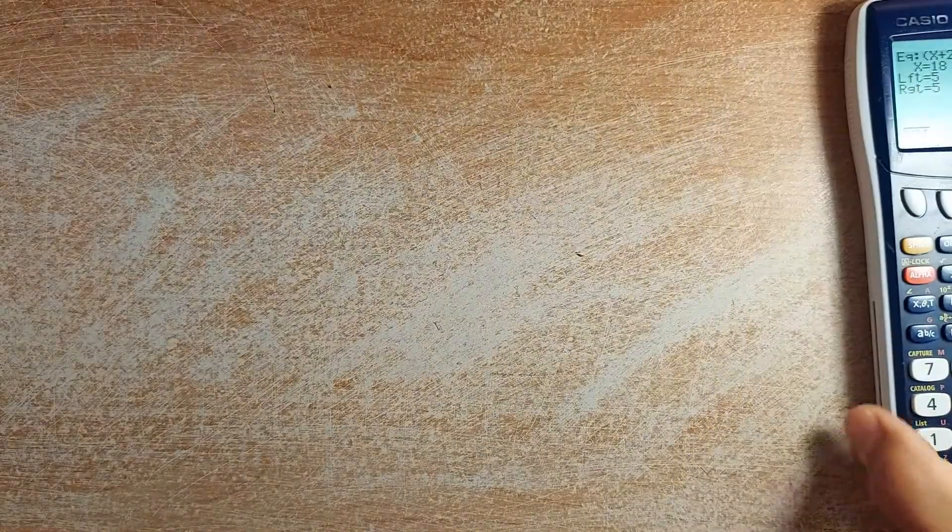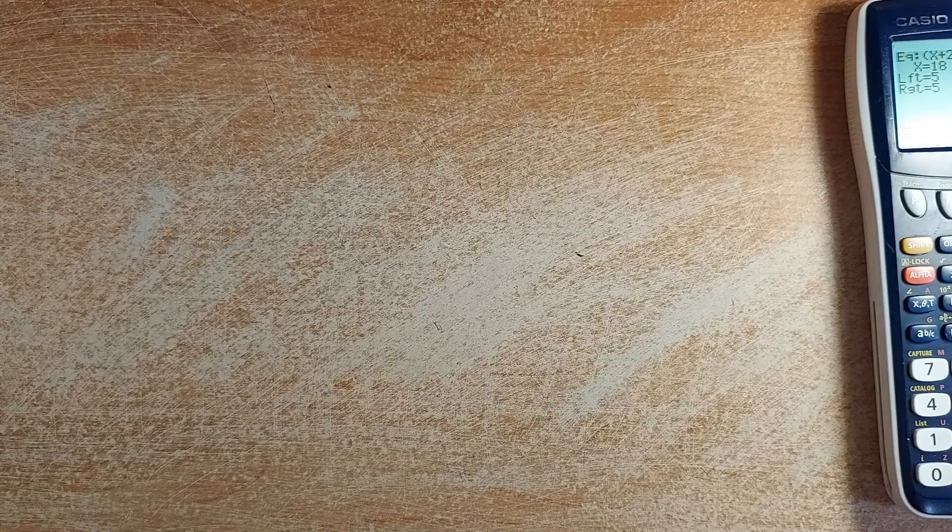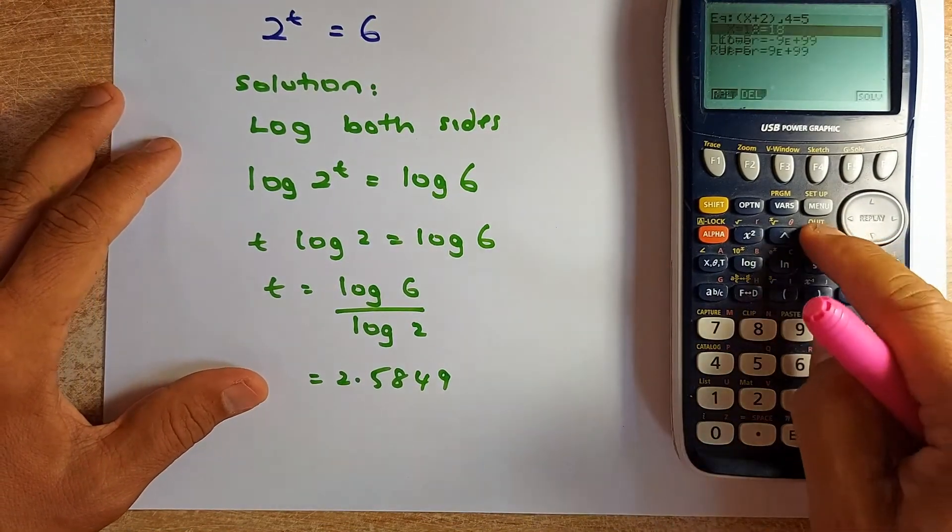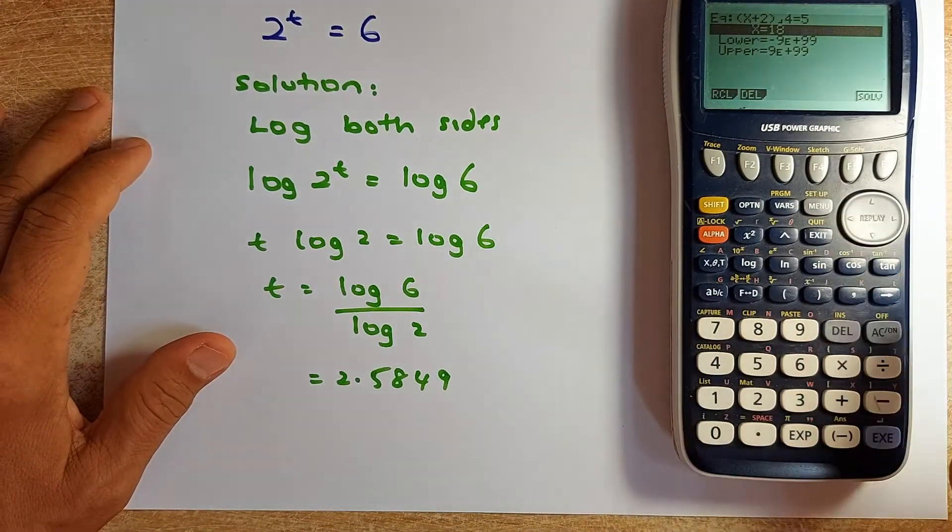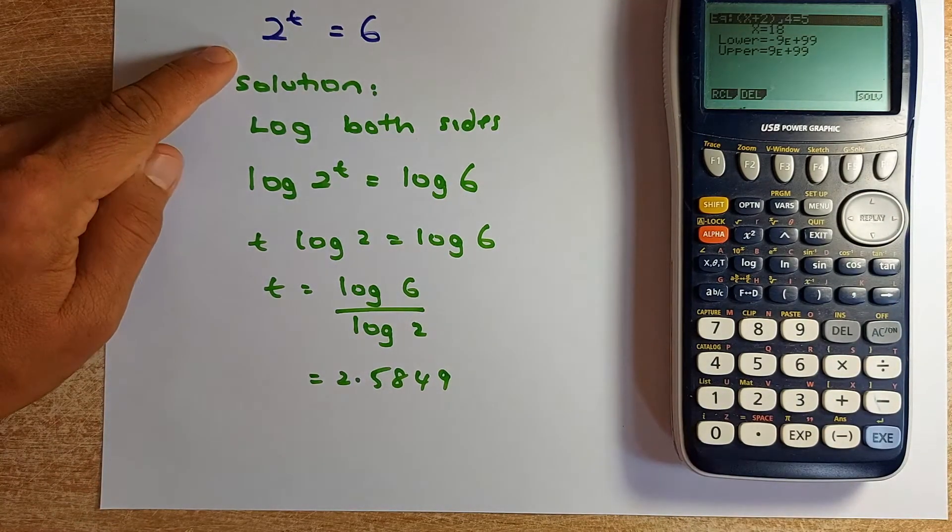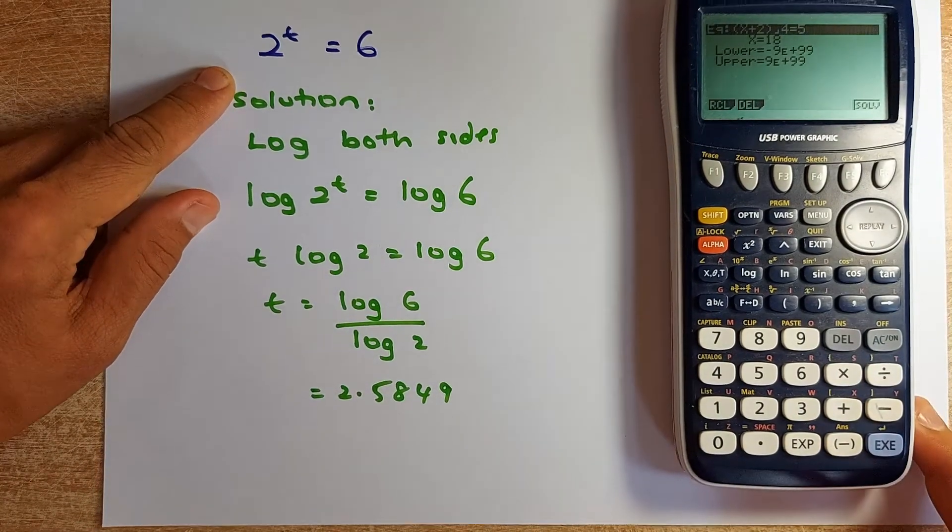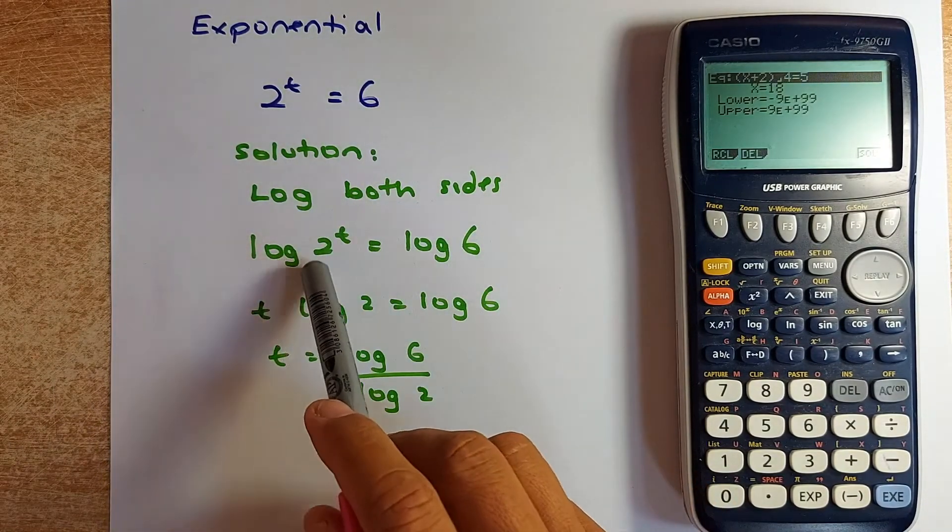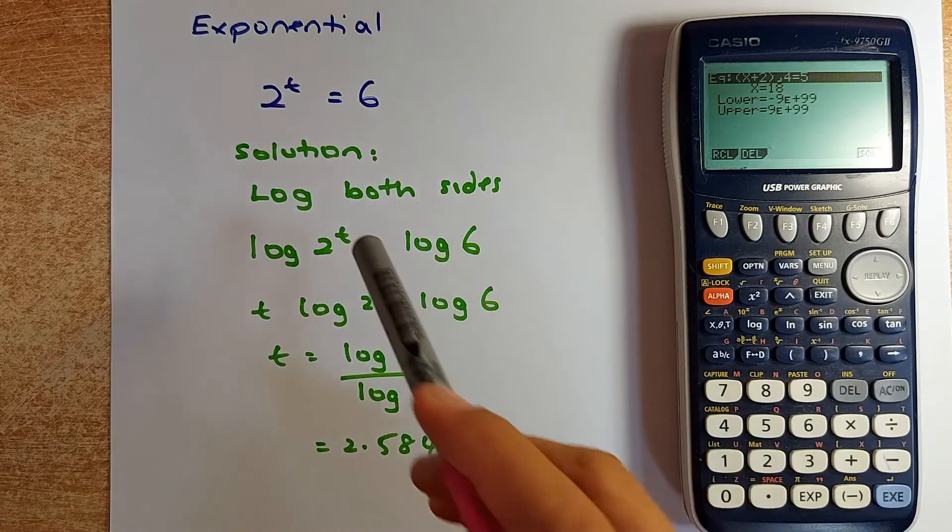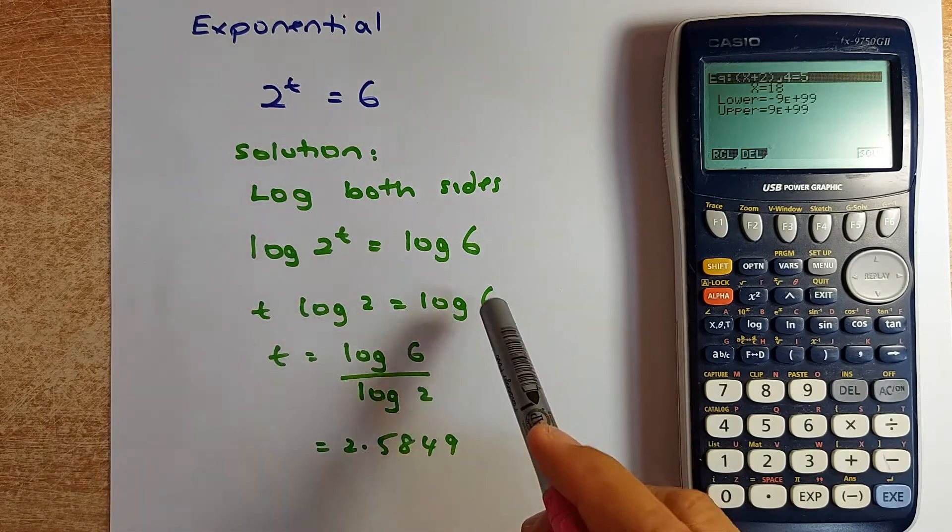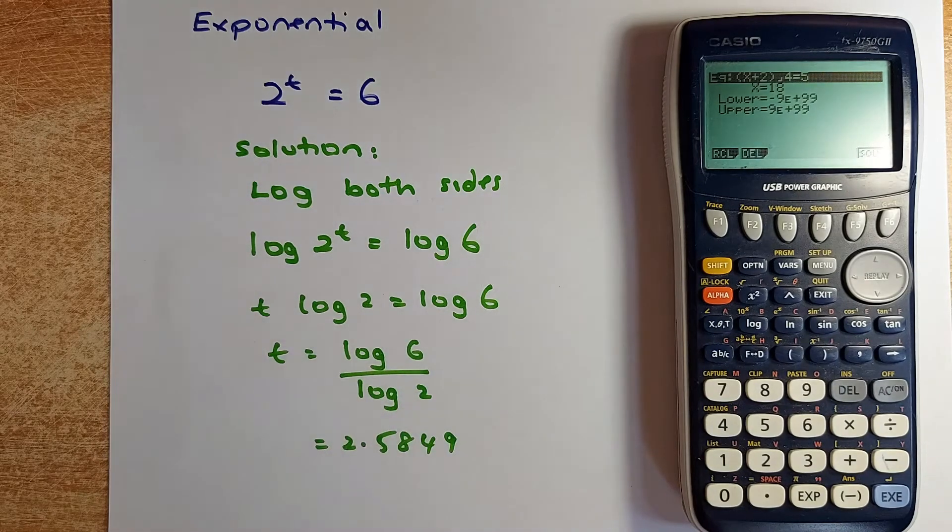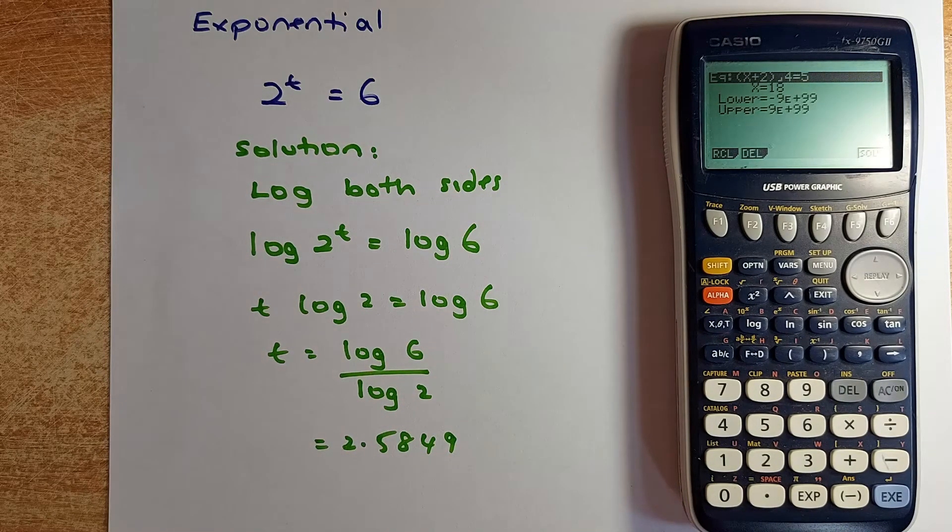Now we are going to do a harder example. We are doing exponential. What we are going to do is that we are going to solve 2^t equal to 6. So exponential is 2^t equal 6. So we are going to log both sides. Log 2^t equal to log 6. What happens, the t can come down. So t log 2 equal to log 6. And put in your calculator, t equal to log 6 divided by log 2. And the answer is 2.5849. So we shall do that in a calculator.